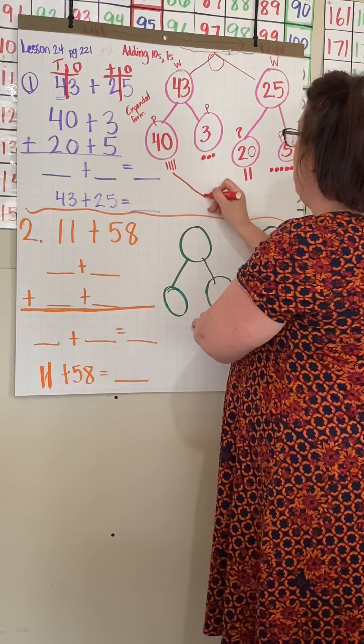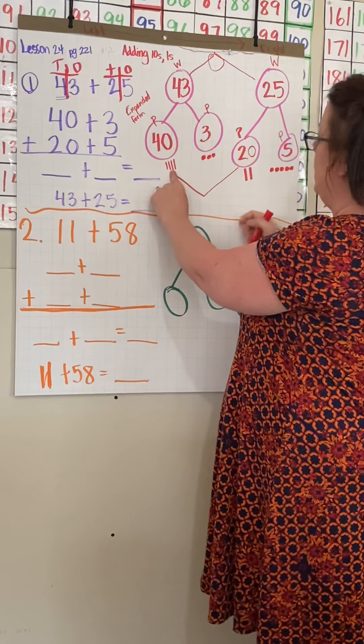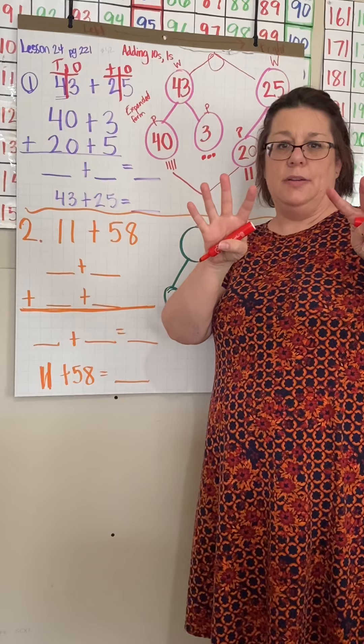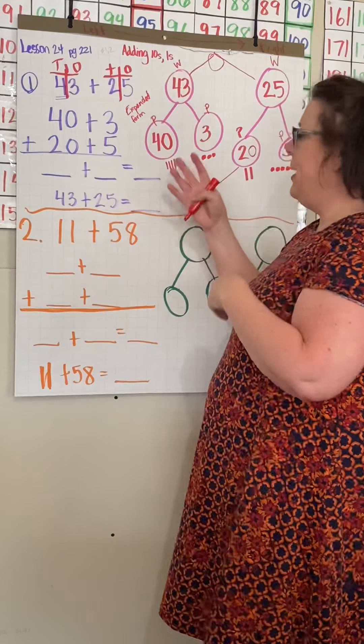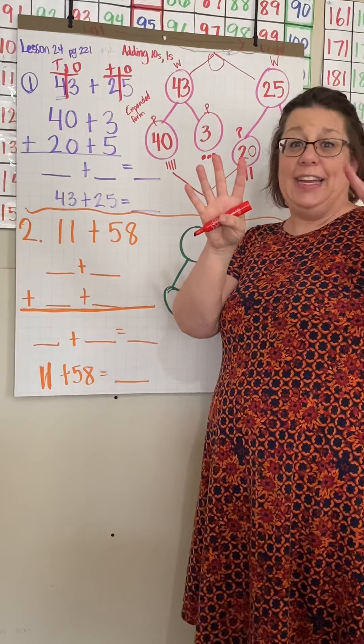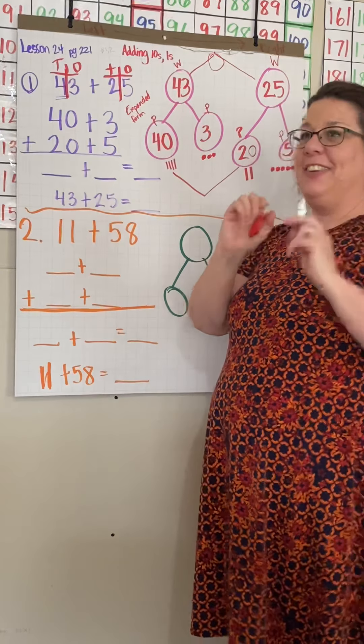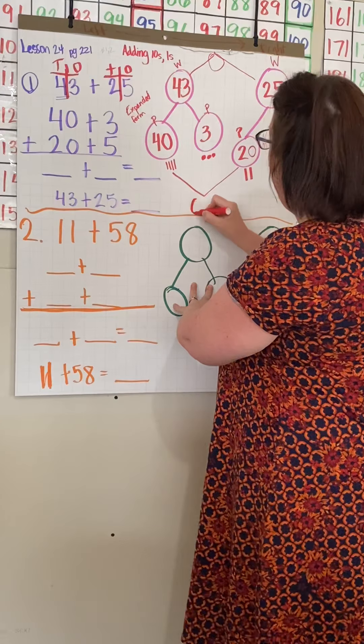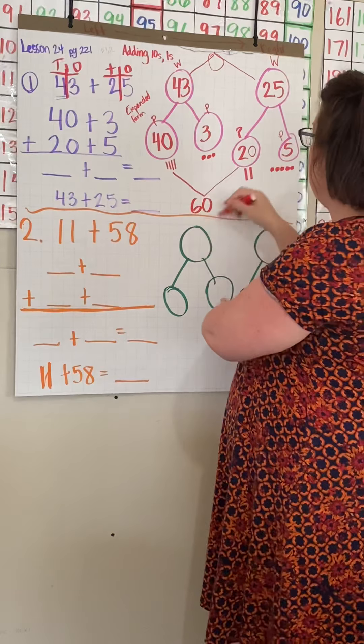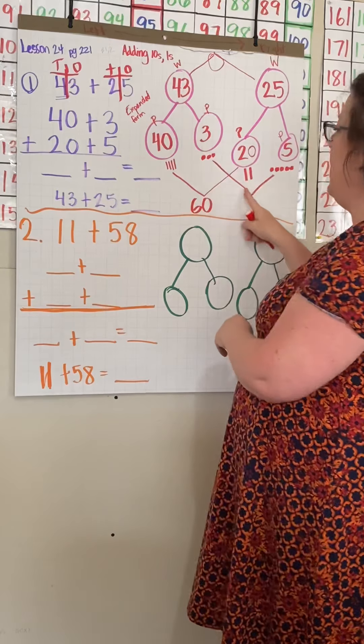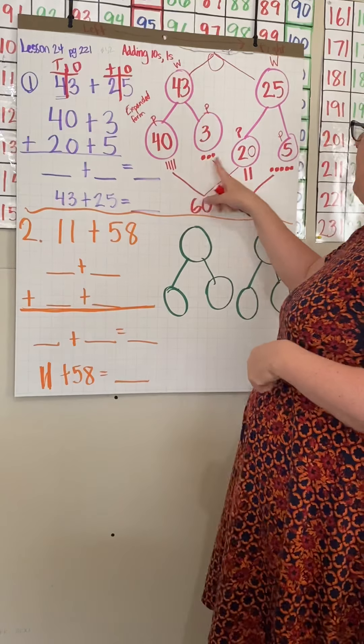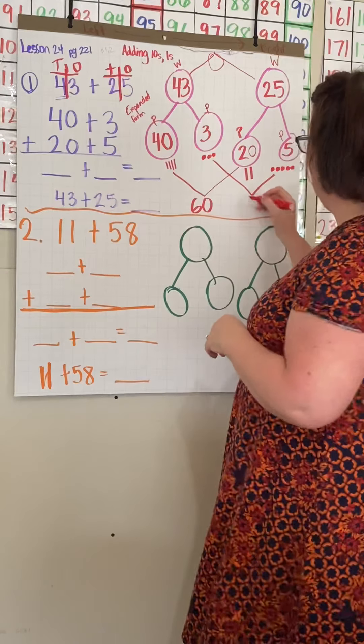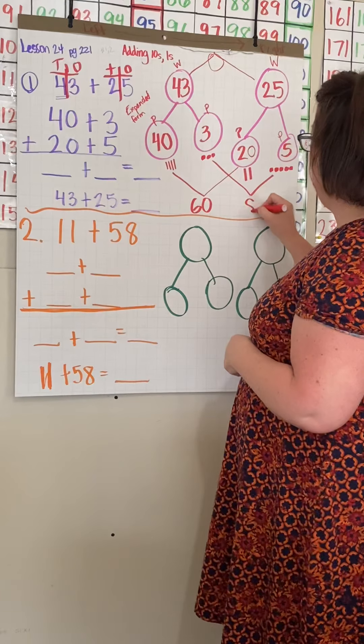So now we're going to put our tens together. So I'm going to make this carrot and I have four tens plus two tens. What is four plus two? Six. Right. So what is 40 plus 20? 60. Good job.